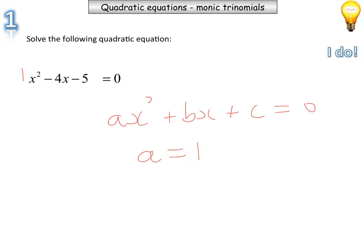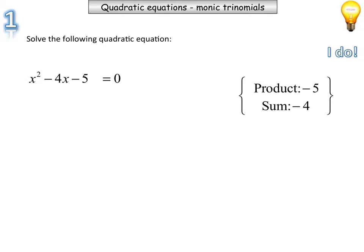Like this one here, we've got 1x² - 4x - 5 = 0. When we were looking at factorization of monic trinomials, we had a method where we had our two sets of brackets and we looked at this particular term and the coefficient of x.